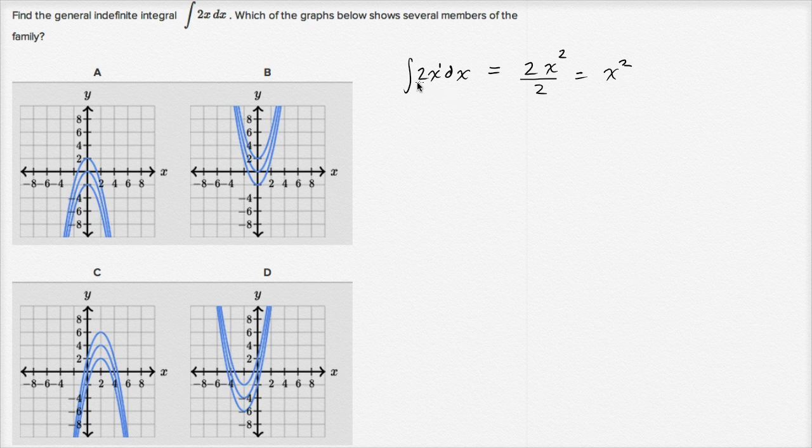And you might have done that on your own. You said, okay, I know that the derivative of x squared is two x, so the antiderivative of two x is x squared.